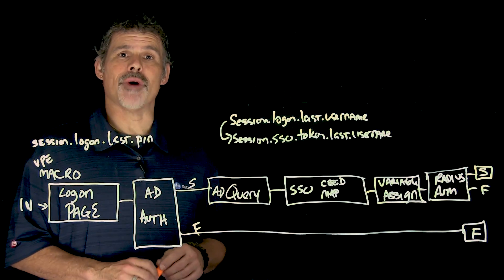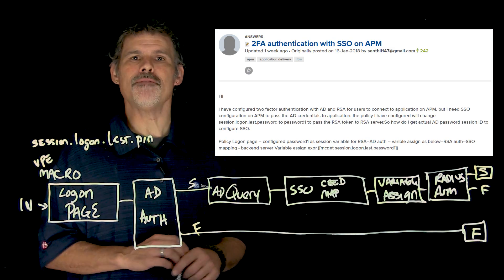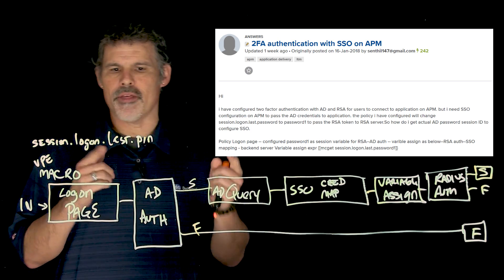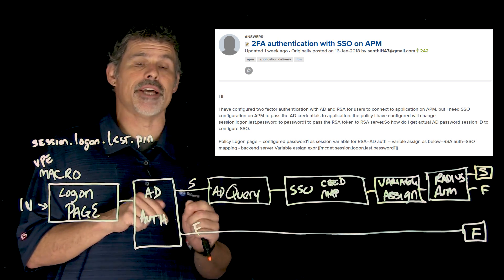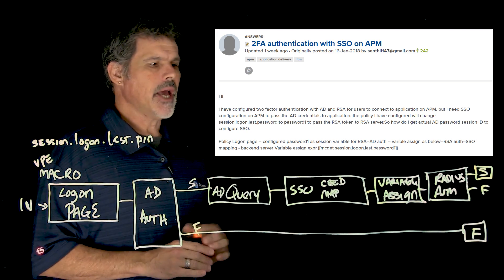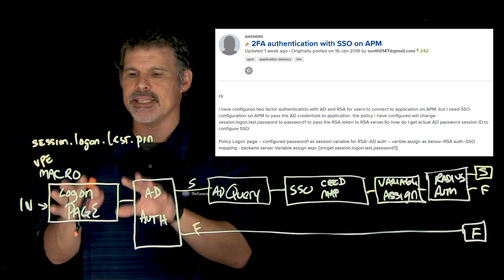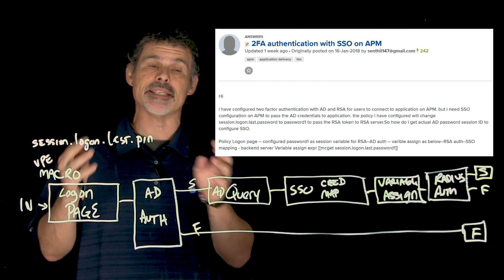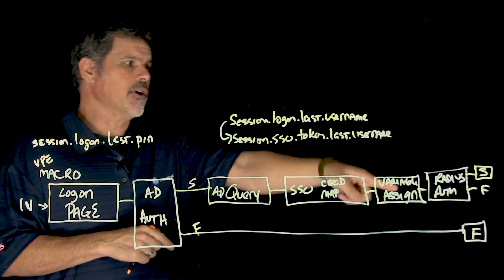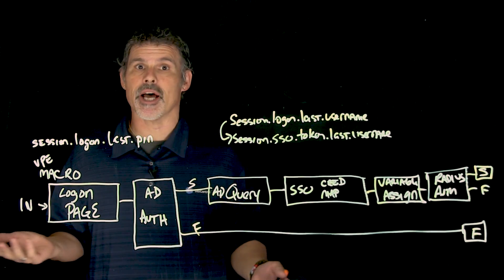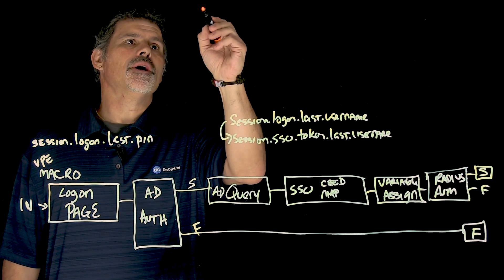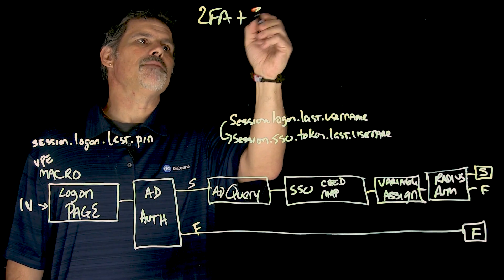This week's question comes to us from Senphil147 out of the UK. He's trying to do two-factor authentication with Active Directory and RSA tokens, but he needs to do single sign-on to the app and wants to know how to get the Active Directory session password over to the application for single sign-on.